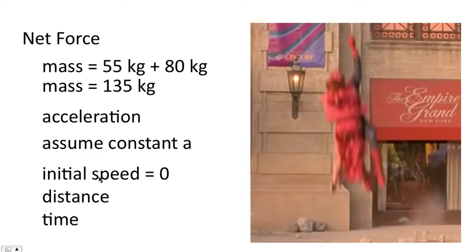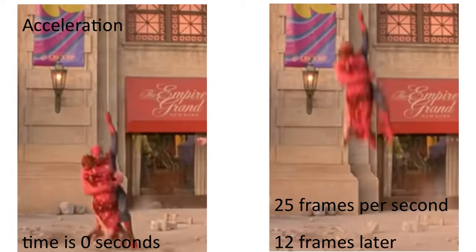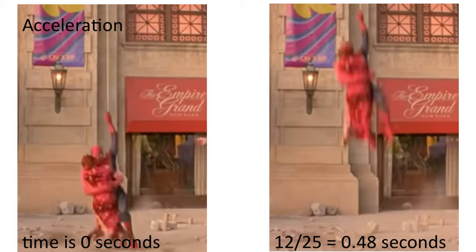Next, let's focus on time. This video was recorded at 25 frames per second, and I advanced the movie 12 frames later to generate this image. And so, 12 divided by 25 is 0.48 seconds. So we have our time.